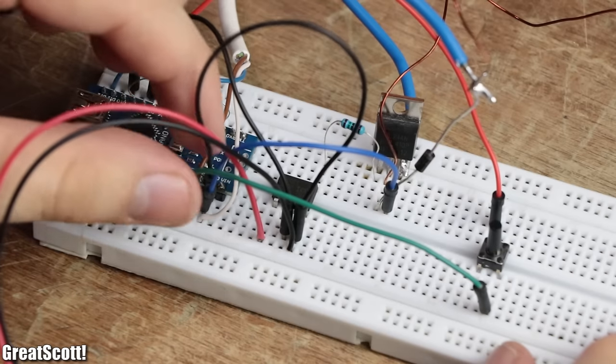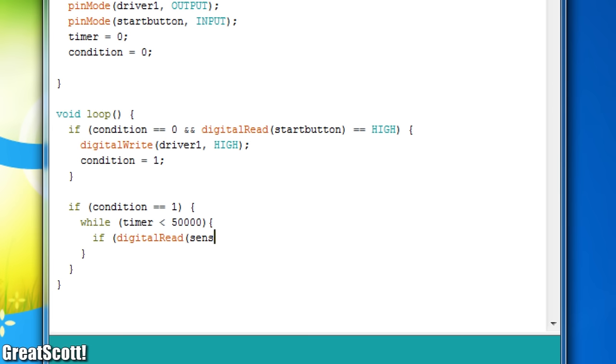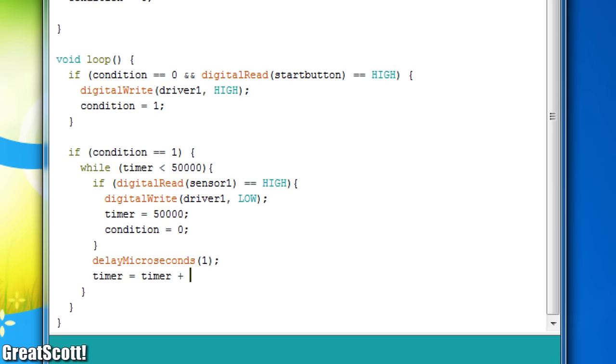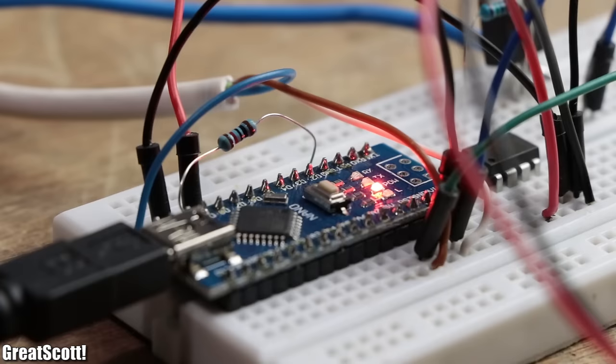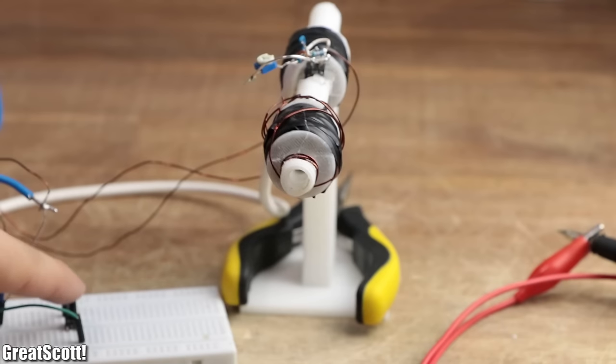All that was missing was a start button and a bit of code, which basically tells the Arduino that it turns on the MOSFET when the button is pushed and turns off the coil when either the IR sensor noticed the projectile or when a second has passed for safety reasons of course. After uploading the code and doing a couple of test shots, it did work pretty well.